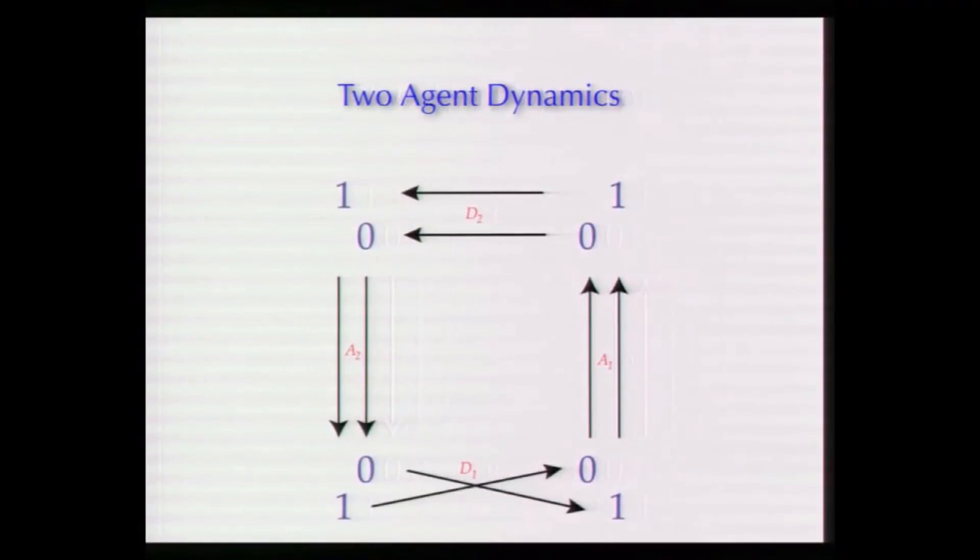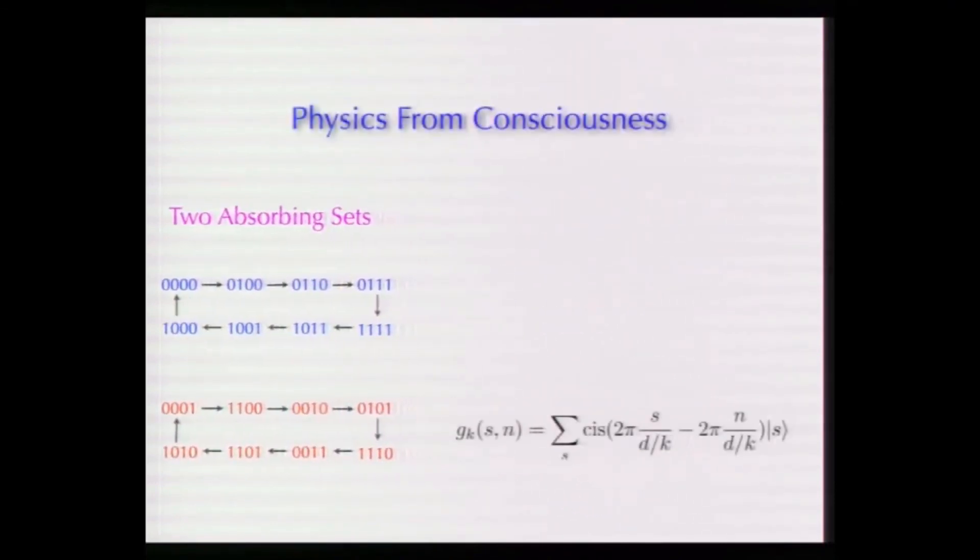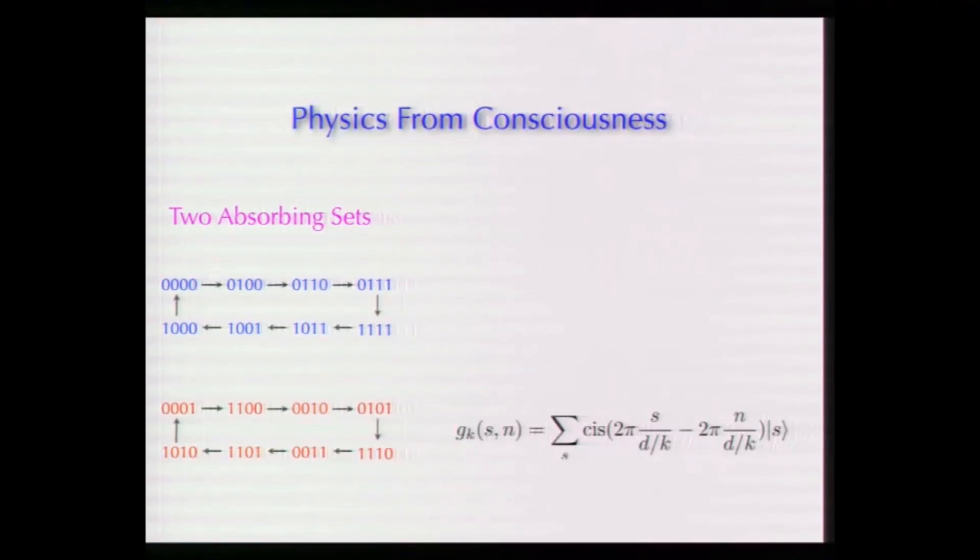If I start with consciousness, if I'm going to solve the mind-body problem, I can assume that physics is fundamental, and then my burden is to get consciousness. Or, what I'm trying to do is the opposite. I assume consciousness is fundamental. Then, my burden is to show that all of physics comes out of it. Quantum mechanics and so forth comes out of this. And it does. So, this is an abstract agent dynamics where it's very simple. Each agent can only see one bit of information, zero or one. And you can actually program up these things. This is two agents passing information back and forth, zeros or ones.